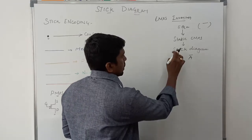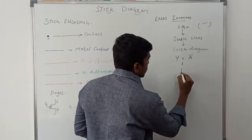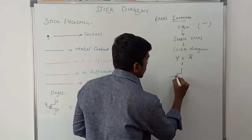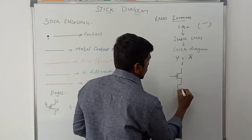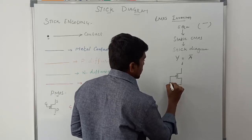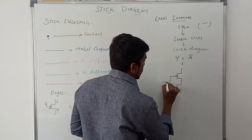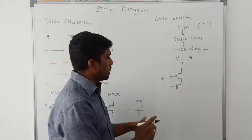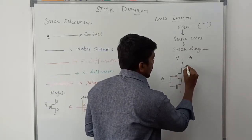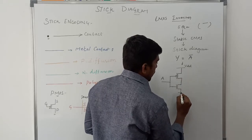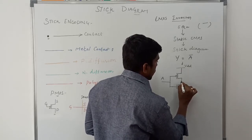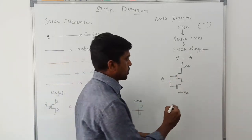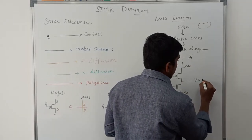Now we draw the static CMOS circuit for this equation. The first one is the PMOS transistor and the second one is the NMOS transistor. Input A is applied to both the PMOS circuit and the NMOS circuit. PMOS is connected to VDD and NMOS is connected to VSS, and you get the output from the middle of PMOS and NMOS, so Y equals A-bar.